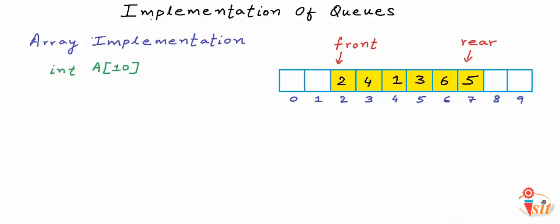Dequeue means we must remove an element from the front of the Queue. In this example, a dequeue operation should remove number 2. To dequeue, we can simply increment front, because only the cells from front to rear are part of the Queue. By incrementing front, we discard that index from the Queue. We do not care what value lies in a cell not part of the Queue — when we include a cell again, we overwrite its value anyway.